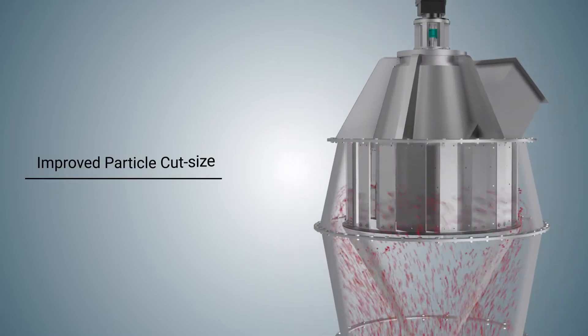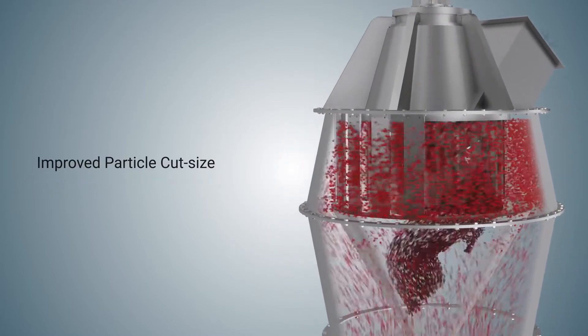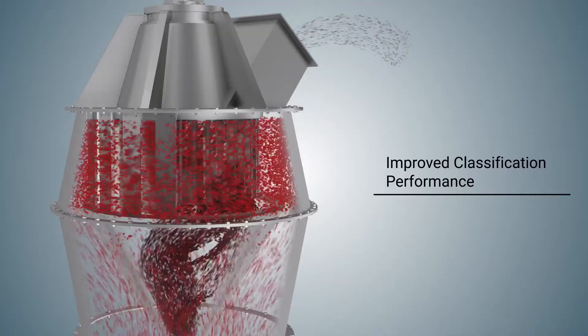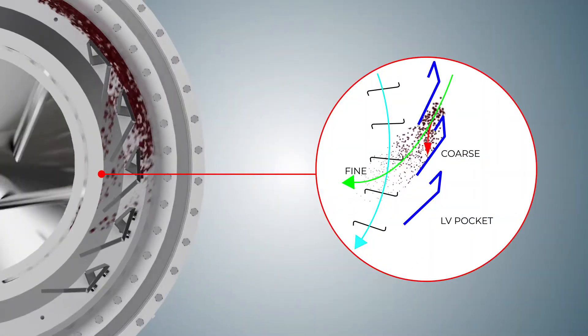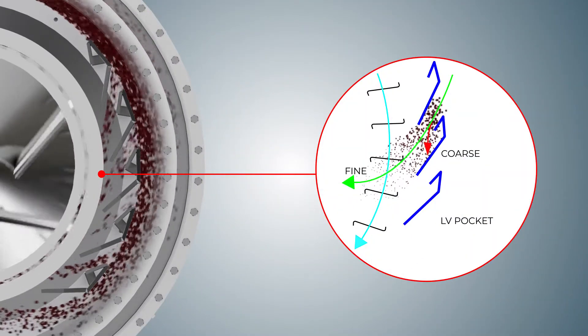The superior design results in improved particle cut size and overall improved classification performance. The BLVT Classifier increases mill capacity by utilizing a two-layer classification system.